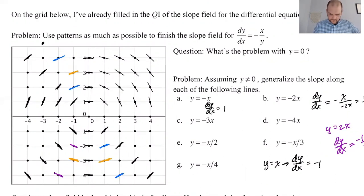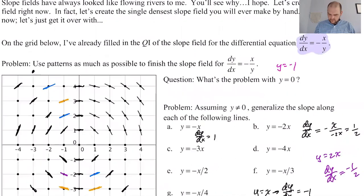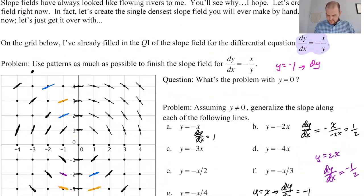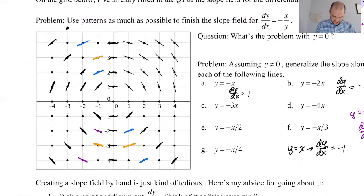If y is equal to negative one, then dy/dx is going to be just x. If x is 2 then my slope is that. If it's 3 my slope is this. If it's 4 it's very steep. Negative 2, negative 3, negative 4, very steep.